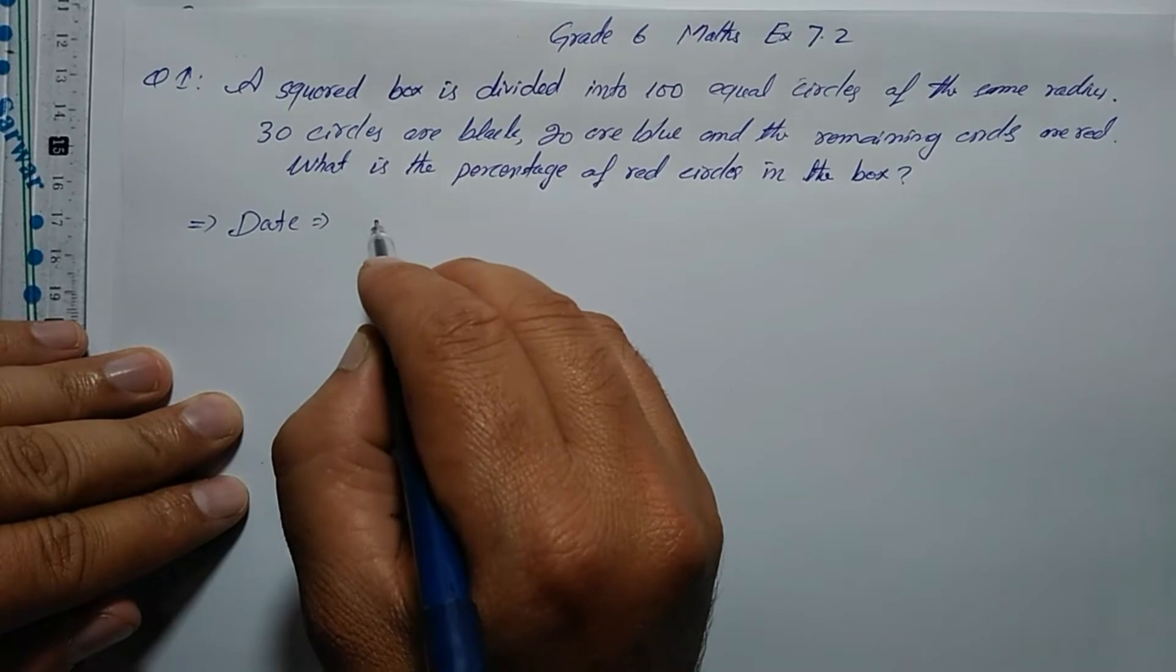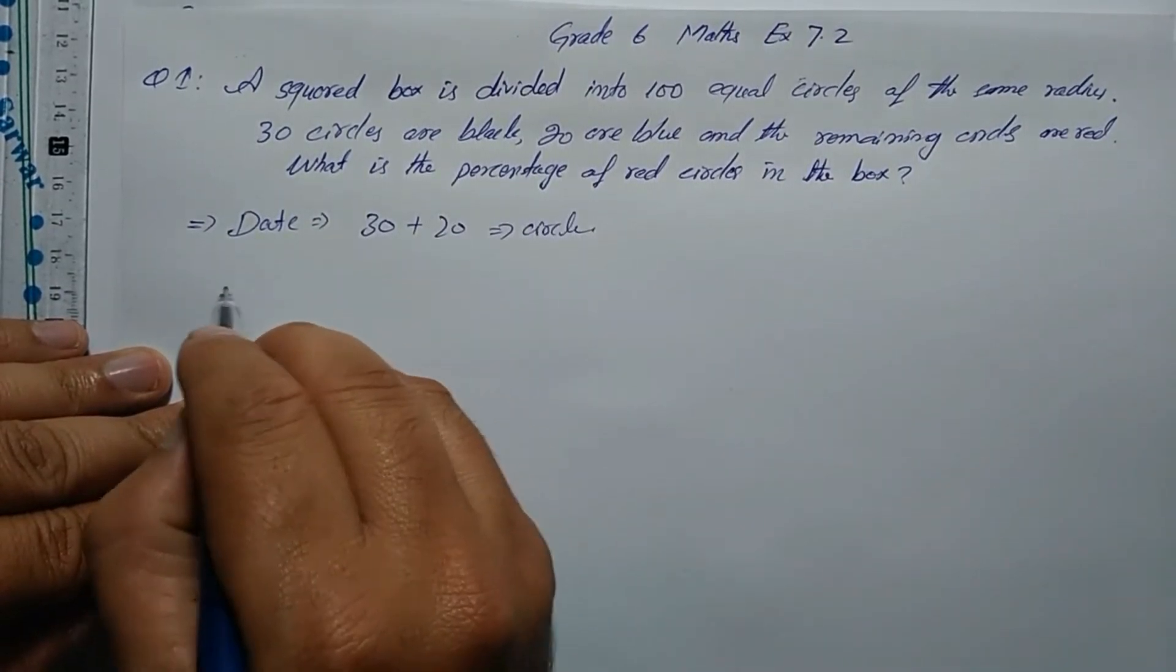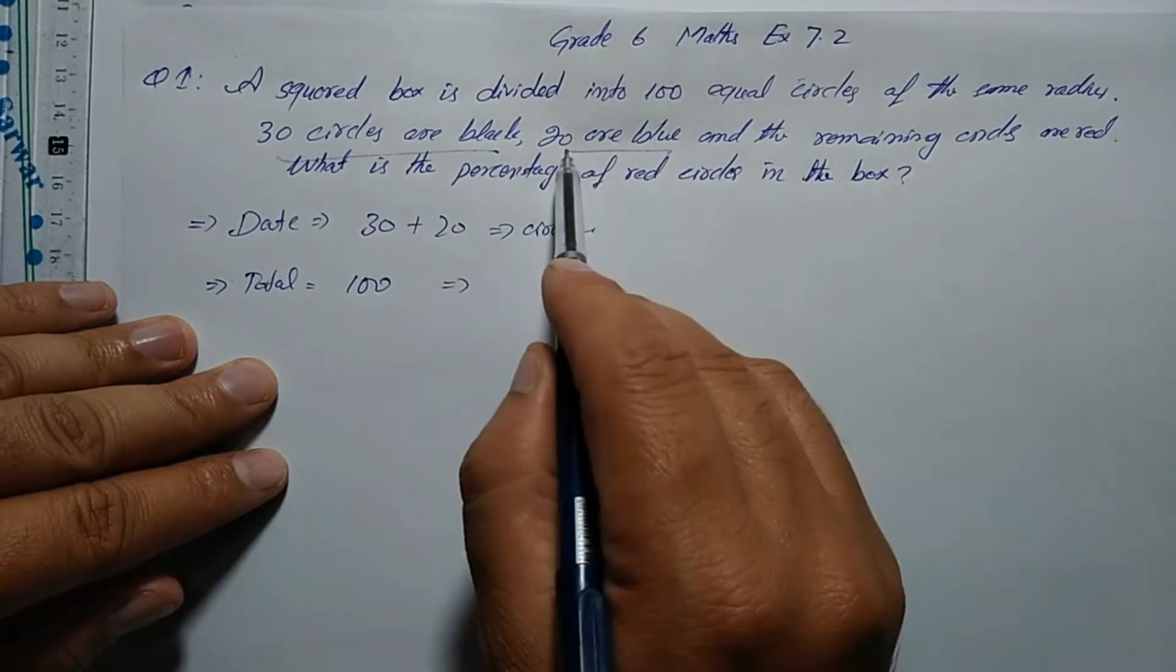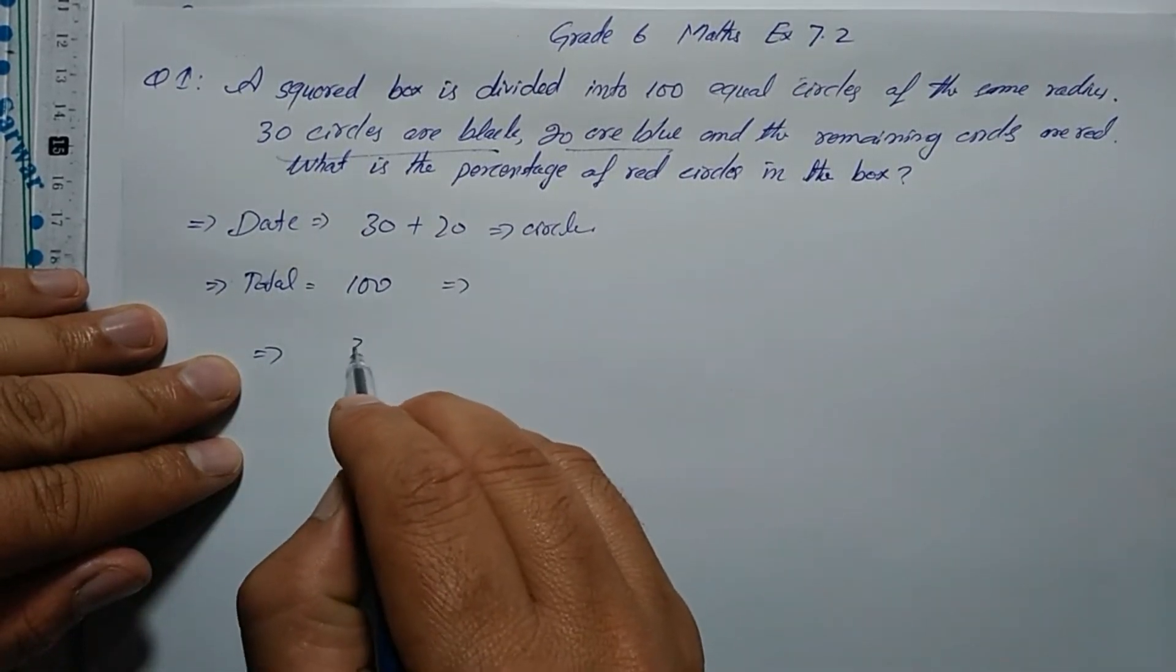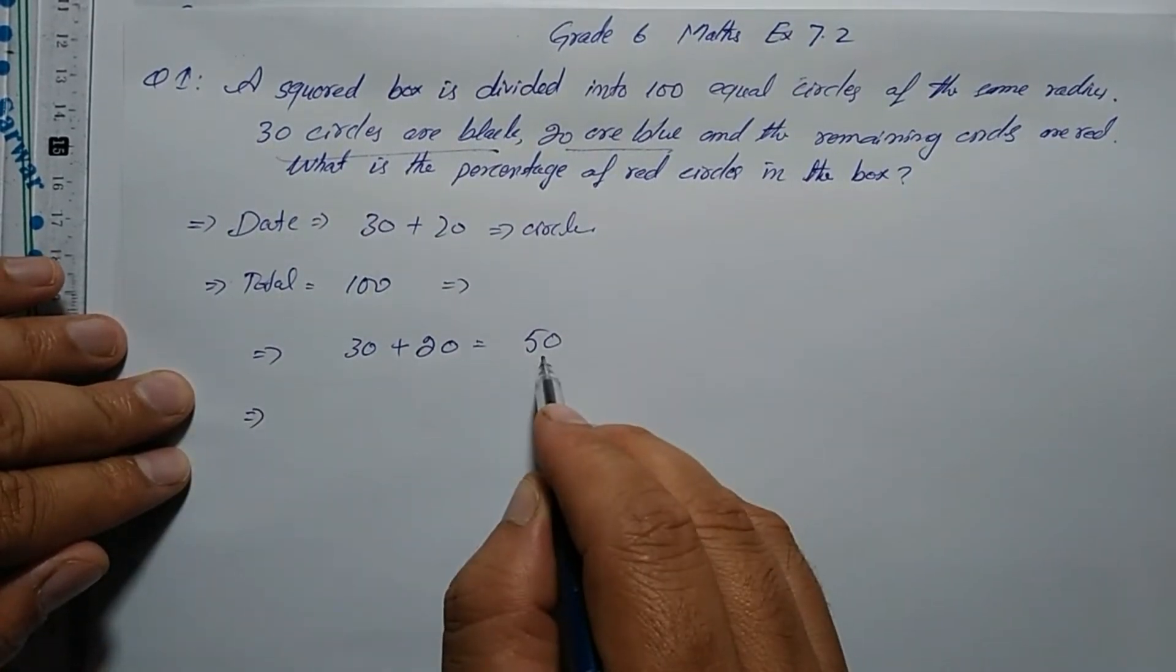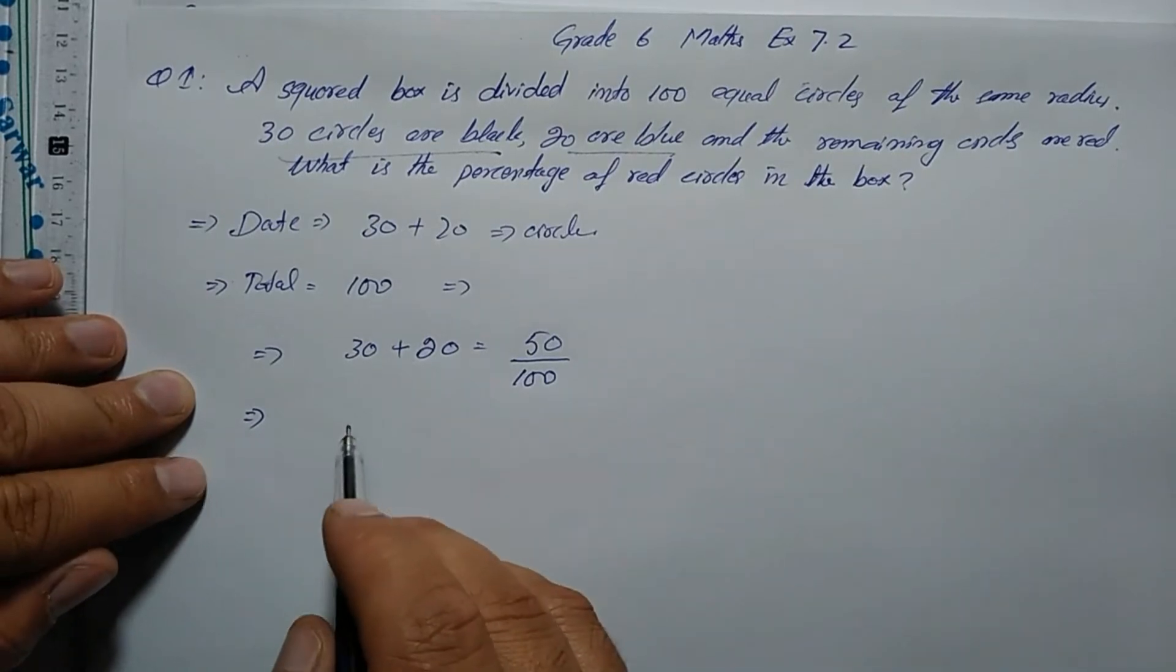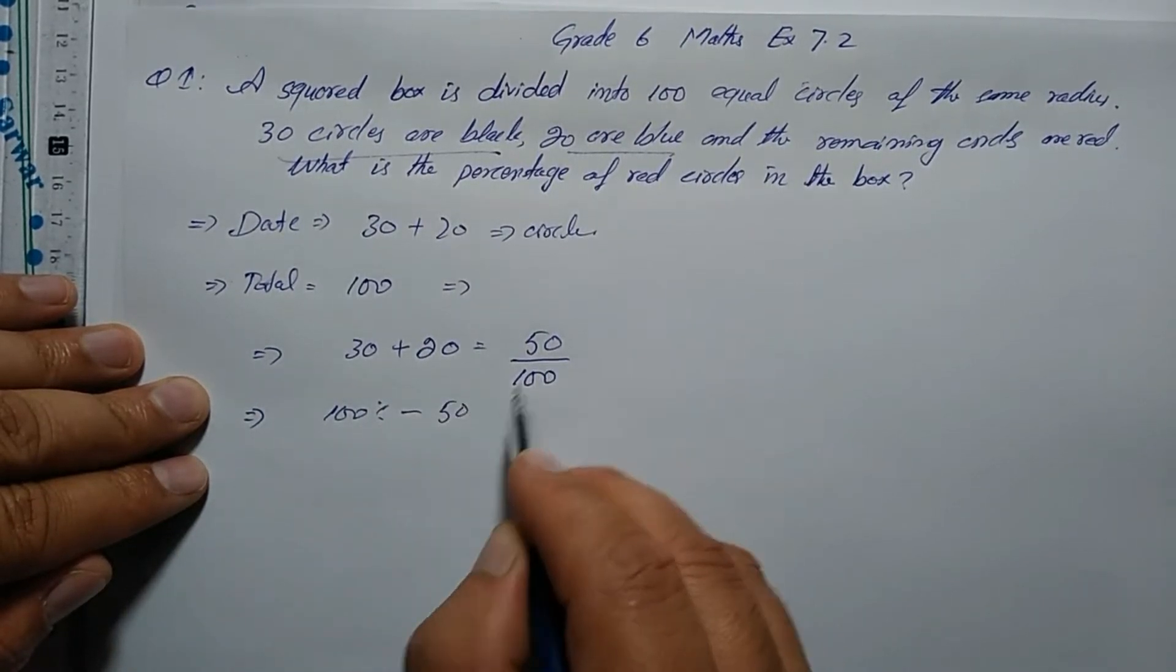What is the percentage of red circles in the box? So we have 30 plus 20 circles given - black and blue. Total circles are 100. We will subtract the given circles from the total. We will add 30 plus 20 which equals 50.